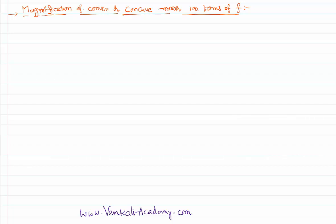Hello everyone, welcome to this video lesson. In this lesson we would like to express the magnification of a convex or a concave mirror in terms of focal length. We already have a formula for the magnification as minus v by u, where u is the distance of the object and v is the distance of the image. Now we want to express it in another format where f is also involved, so we are using a formula called the mirror formula.